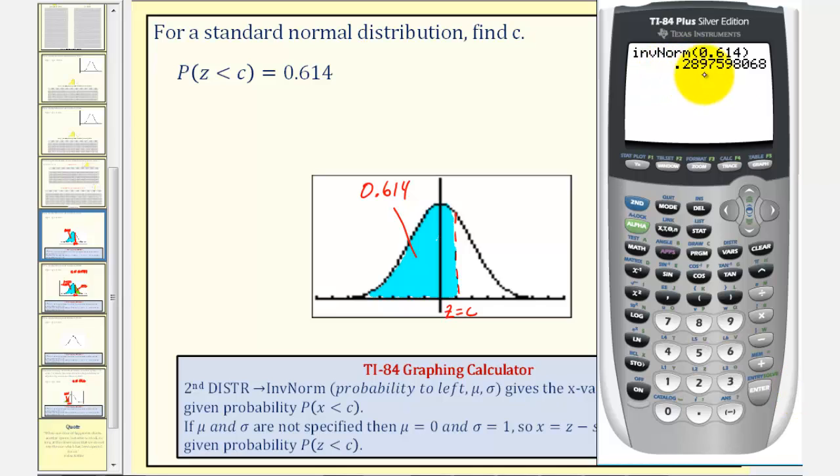And this gives us our value of C, or the Z-score, such that the probability of Z being less than this value is equal to 0.614. So rounded to four decimal places, C would be approximately 0.2898.